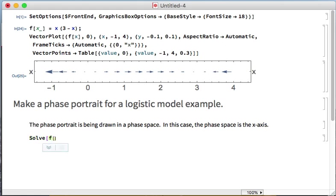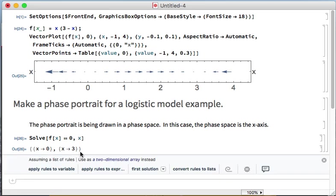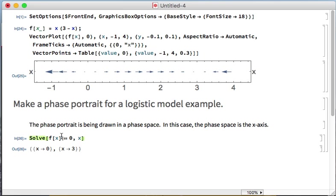The first thing I'm going to do is find my fixed points. I want to solve for all the points where f of x equals 0, where my velocity is 0. My velocity is 0 at x equals 0 and x equals 3.